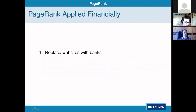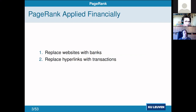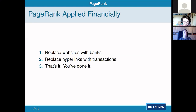How do we apply this in a financial setting, and why use multi-party computation to do it secretly? We replace websites with bank accounts and hyperlinks with bank account transactions — the entire system works perfectly fine doing that. The only issue is that bank accounts and transactions are usually secret information and not publicly available.